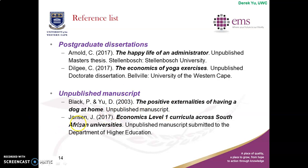Next one: Yanson, initial J, 2017 — the manuscript title is 'Economics Level One Curricula Across South African Universities.' Again, you don't see any working paper number or research report number. You don't think it is a journal article, but maybe somewhere on the page you see the logo of the Department of Higher Education. Then you can conclude by saying it is an unpublished manuscript submitted to the Department of Higher Education.